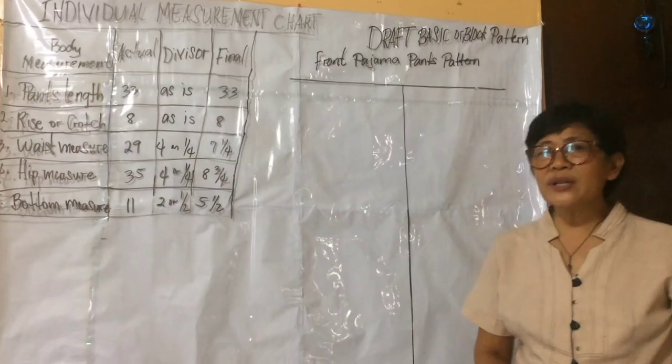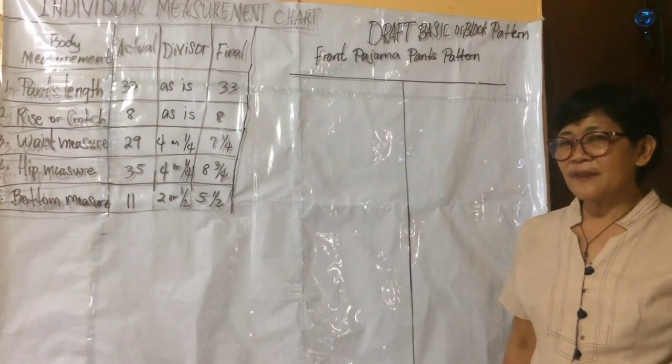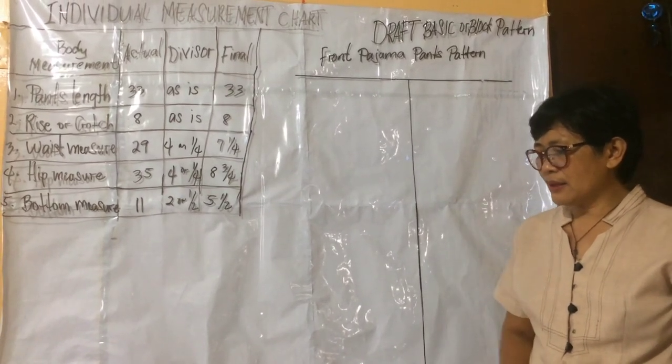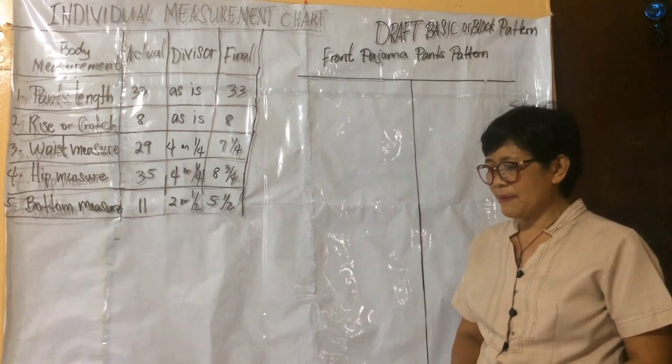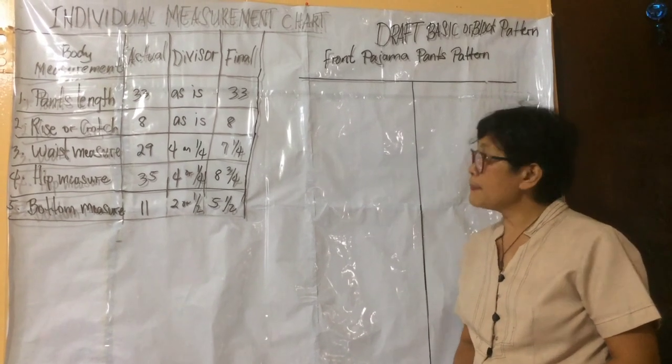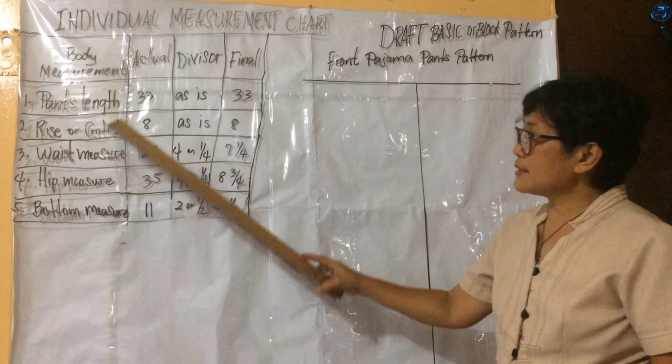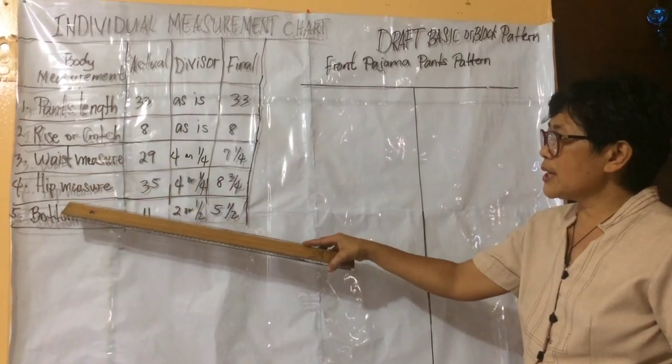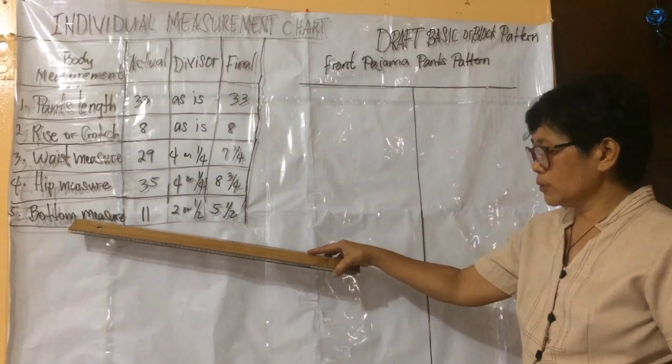Now we are going to draft front pajama pants. The different body measurements needed in drafting pajama pants are pants length, rise or crotch, waist measure, hip measure, and bottom.